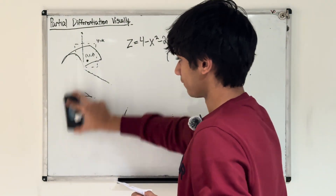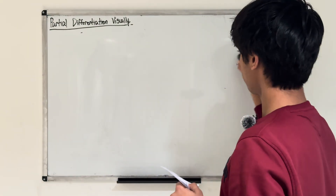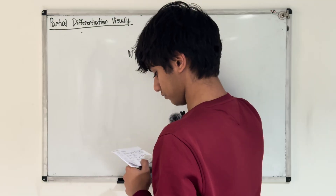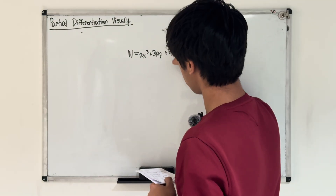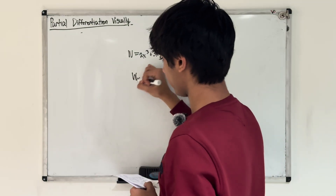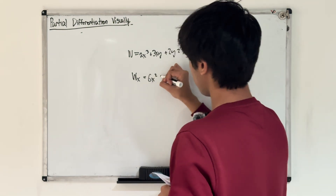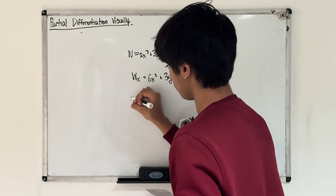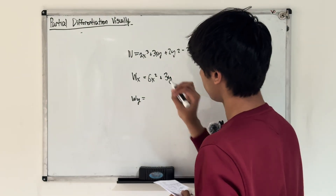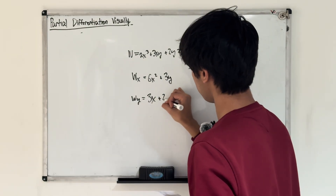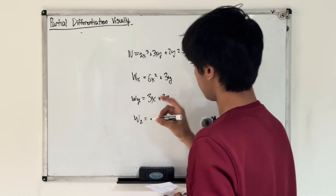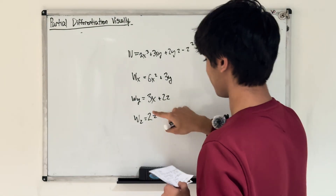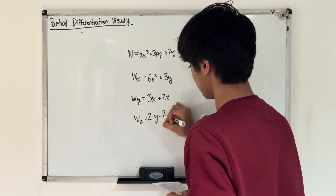Let's do another one with more inputs — this is multivariable, so let's try some more inputs. Let's say w equals 2x cubed plus 3xy plus 2yz minus z squared. For partial with respect to x: 6x squared, then y is constant so 3y, and the remaining terms are constant — so our derivative is 6x² + 3y. For partial with respect to y: the first term is constant, x is constant giving 3x, z is constant giving 2z, so the y partial is 3x + 2z. For partial with respect to z: x and y terms are constant, y is constant giving 2y, minus 2z — so the z partial is 2y minus 2z.